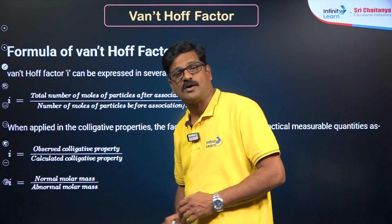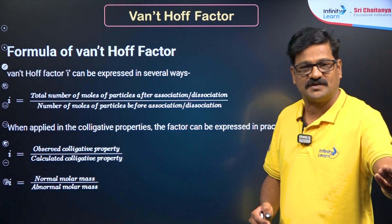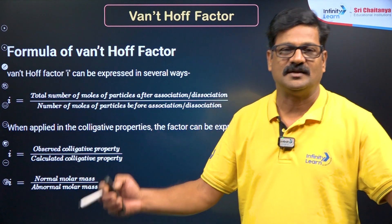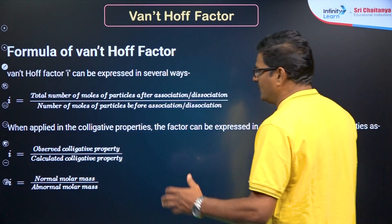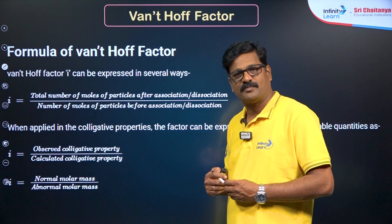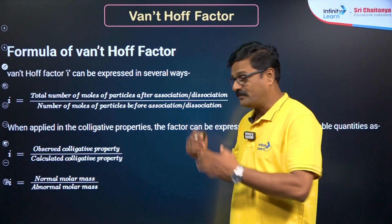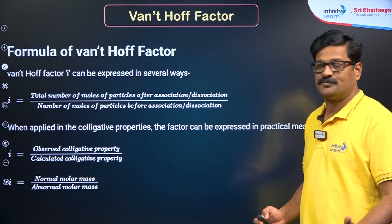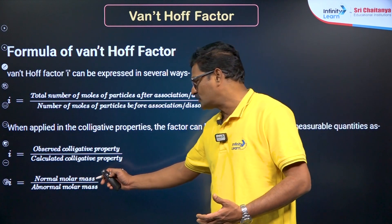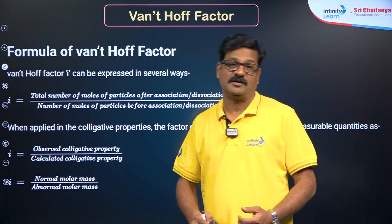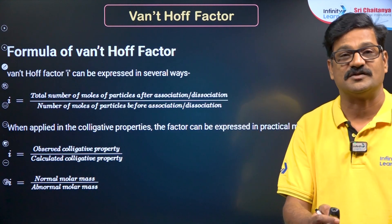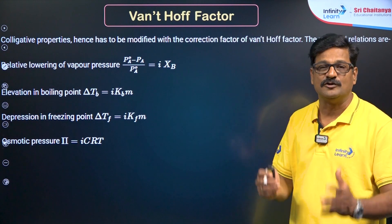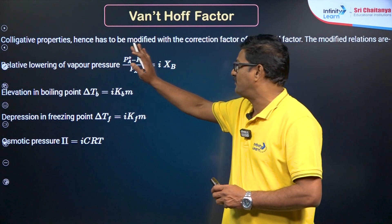i equals the total number of particles after association or dissociation upon the total number of particles dissolved in solution. When applied, i equals observed colligative properties upon theoretically calculated colligative properties — that is, experimental colligative properties upon theoretical colligative properties. Alternatively, i equals normal molecular mass divided by abnormal molecular mass. Colligative properties and molecular mass are inversely related.